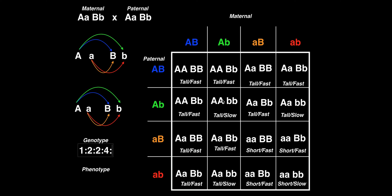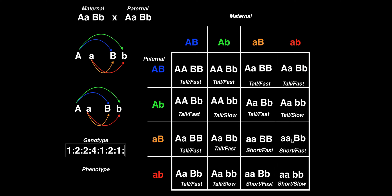For little a, little a, big B, big B — there's only one of those. Little a, little a, big B, little b — there's one on this diagonal, so two of those. And then down in the corner, little a, little a, little b, little b — completely homozygous recessive for both genes — only one of those.